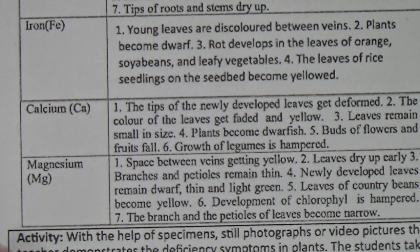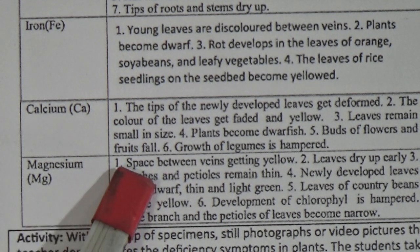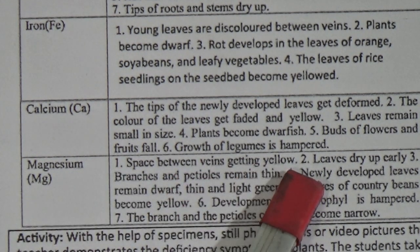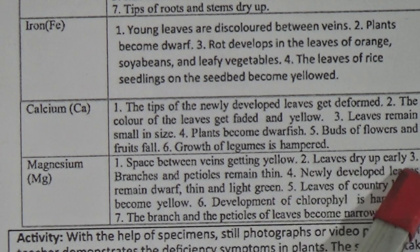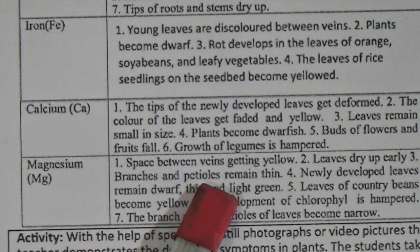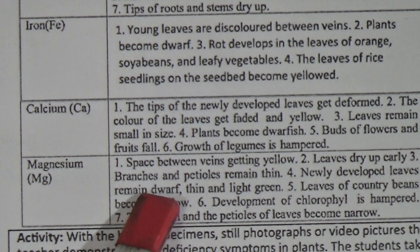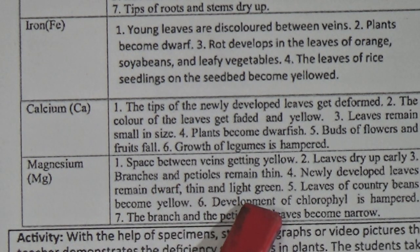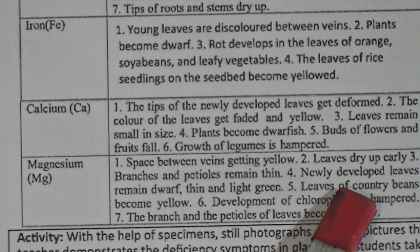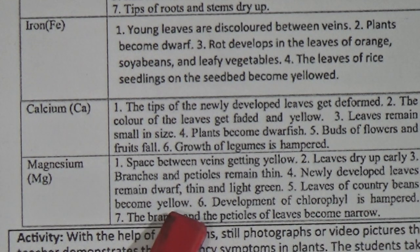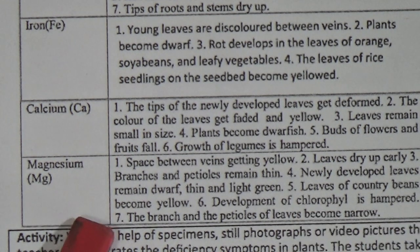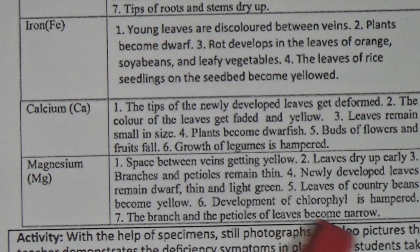And the last element is Magnesium, symbol Mg. 1. Space between veins becomes yellow. 2. Leaves dry up early. 3. Tree branches and petals remain thin. 4. Newly developed leaves remain dwarf, thin, and light. 5. Leaves between veins become yellow. 6. Development of chlorophyll is hampered. 7. The branches and petals of leaves become narrow. These are the deficiency symptoms of different plant nutrients.